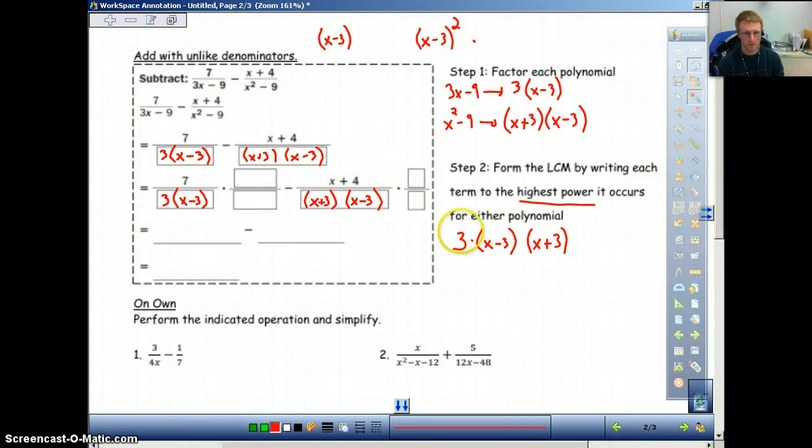Now, what this means by it says to the highest power - this is not in this example, but for example, let's say we had one of our factors on one of them was x minus 3, and let's say on the other one it was x minus 3 squared. We would not need the x minus 3, all we would need is the x minus 3 squared. That's what it means by the highest power that it occurs. So if x minus 3 is here and x minus 3 squared is over here, we would only have x minus 3 squared. But because there's no exponents here, we don't have to worry about that. So now, what does it mean that we do with this? This is where it gets a little bit tricky, but hopefully you can follow along. Everything that you see here in your least common multiple, you want that on every problem that you do to write down what your least common multiple is. And then what you're going to do here is we are trying to make this into this. So essentially, whatever you're missing, whatever you're missing from here. So we have 3 and x minus 3, so we have 3 and x minus 3. So we're missing the x plus 3. That's what we're going to write here.